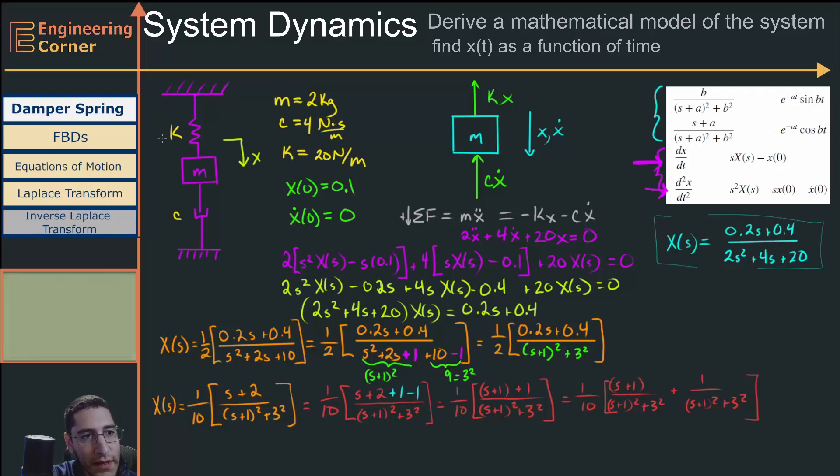Now when we look at this, this matches with this exactly. So I know that I'm going to have a term that's going to be 1/10, x(t) is 1/10 times e^(-t) times the cosine of 3t. That's this first term right here.